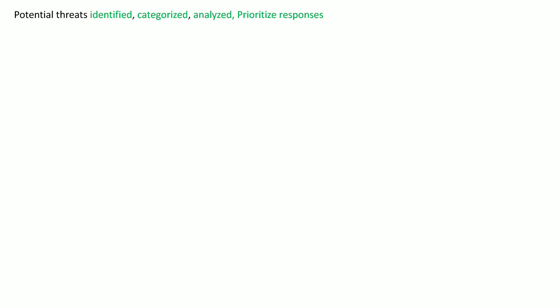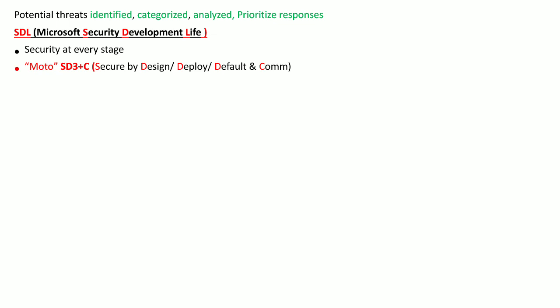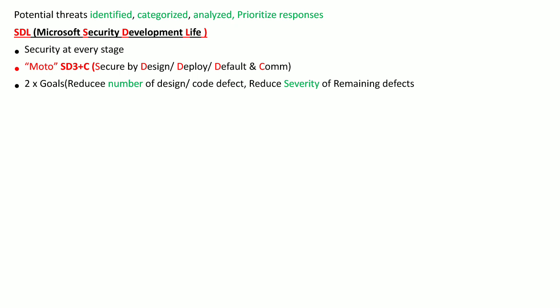The first model is the Security Development Lifecycle by Microsoft. The purpose of this model is to cater for security at every stage of system development. The motto is SD3+C: secure by design, by deployment, by default, and by communication. It covers two goals: to reduce the number of defects in the design or coding of a system, and to reduce the severity of the remaining defects.